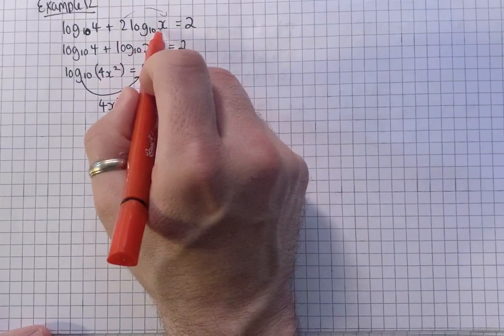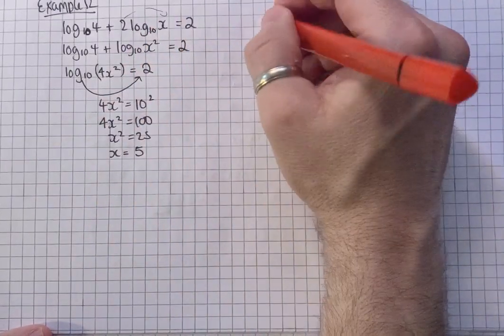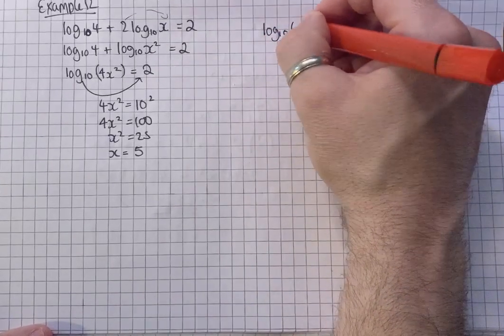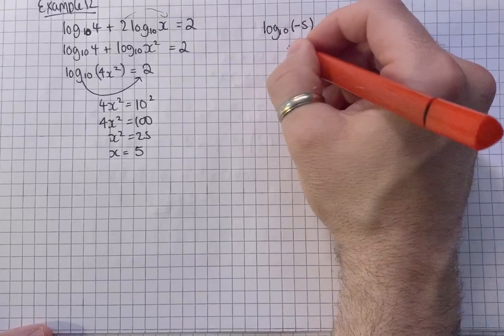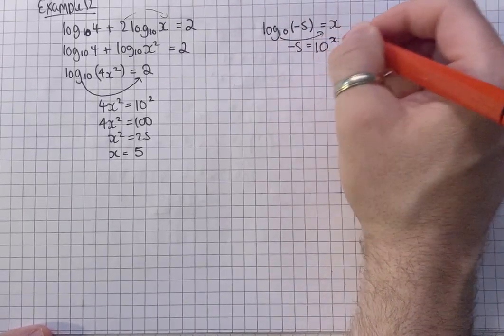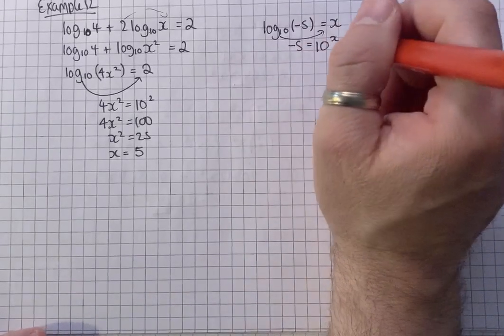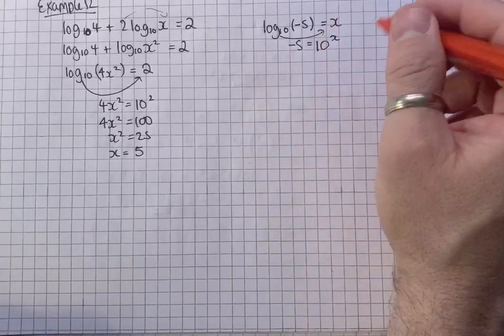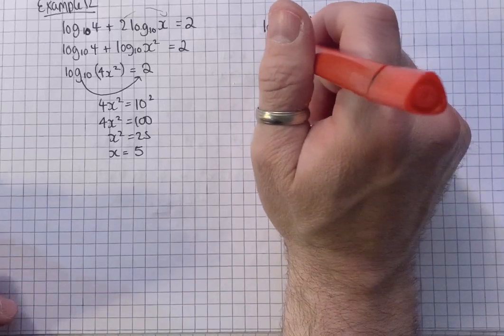Now you may be wondering why I didn't put minus 5. That solution doesn't exist. Because you can't have a logarithm of a negative value. So I can't do log to the base 10 of minus 5. Because minus 5 becomes 10 to the power of x. And there is no such power you can put in to get a negative value. Like an exponential curve doesn't go below the x-axis. So minus 5 solution doesn't exist.